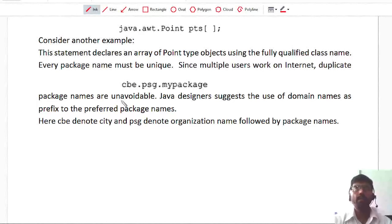For example, I am using domain name like www.google.com. This is one type of domain name. In similar way, I can create my own domain name for creating my package. Here, CBE means it is a city name and PSG means it is an organization name. Like that, I can create my own domain here. If I want to access in internet, I am using domain name system. I can add that domain name system or prefix that domain name system with my package name.